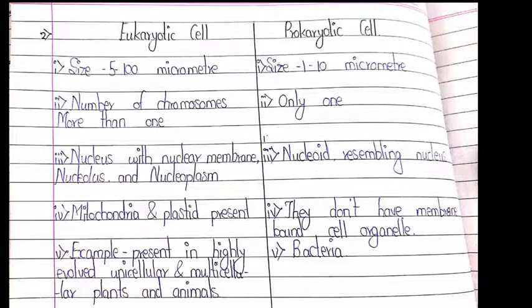Second comparison: eukaryotic cell and prokaryotic cell. Size: 5 to 100 micrometers in eukaryotic cell; 1 to 10 micrometers in prokaryotic cell. Number of chromosomes: more than one in eukaryotic cell; only one chromosome in prokaryotic cell. Eukaryotic cell has a nucleus with nuclear membrane, nucleoplasm. Prokaryotic cell has a nucleoid resembling a nucleus. Mitochondria and plastids are present in eukaryotic cells; prokaryotic cells do not have membrane-bounded organelles. Example: eukaryotic cells are present in highly evolved unicellular and multicellular plants and animals; prokaryotic example is bacteria.